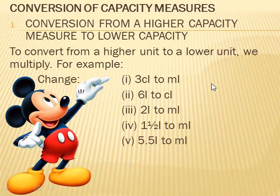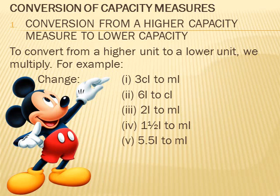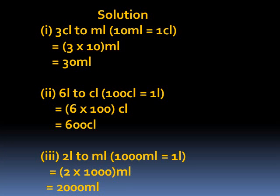Now we're moving straight to conversion of capacity measures, starting with conversion from a higher capacity to a lower capacity. To convert from a higher unit to a lower unit, we multiply — just like when we did length and weight. The only difference is the basic units. So we multiply to convert from a higher unit to a lower unit. Let's take these examples.